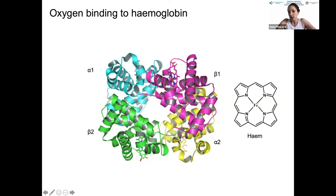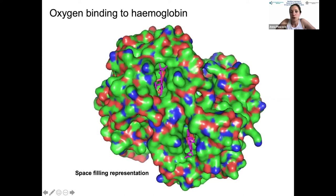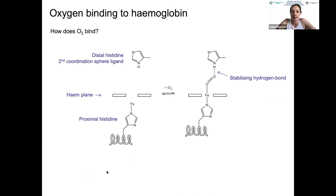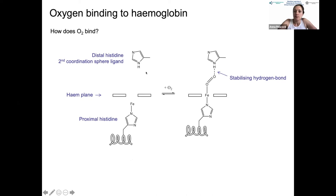Hemoglobin illustrates similar points. It has four subunits each shown in a different color, each containing an iron porphyrin cofactor—the heme. Each heme binds one oxygen molecule, so fully oxygenated hemoglobin carries four oxygens from the lungs to the muscles. In the active site, the iron is located below the heme plane, anchored to the proximal histidine which connects it to an alpha helix, and a distal histidine sits above the porphyrin ring as a second-coordination-sphere residue.